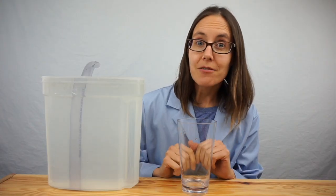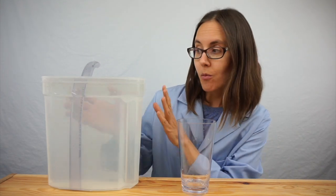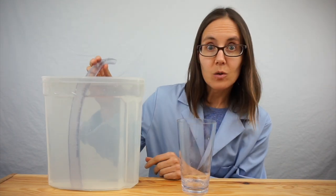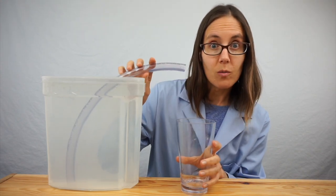Humans have been using siphons to move water for thousands of years. And if you ask most people how they can get water out of this big container without tipping it over, they'll say, well, get a tube and suck on it to get the air out and then, you know, bend the tube and the water will come out.